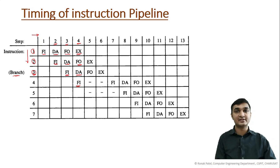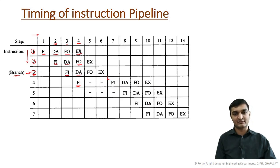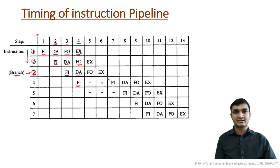When instruction three is a branch instruction, after decoding it we find out there is a branch — meaning we need to update the program counter and empty the pipeline. After completing and executing instruction three, we can then start fetching the next instruction, then decode, fetch operand, and execute. Whenever there is a branch, we need to empty the pipeline. In the next video we will see the conflicts that occur in instruction pipeline.